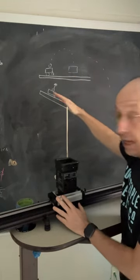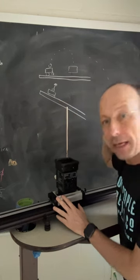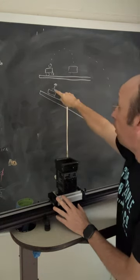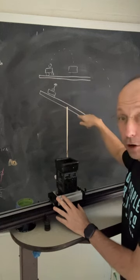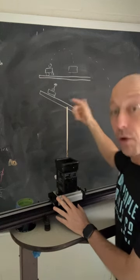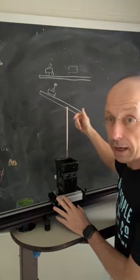Now imagine that I incline the track and I repeat the experiment with an incline track. Will the ball land ahead of the cart, behind the cart, or in the cart? And why? Go!